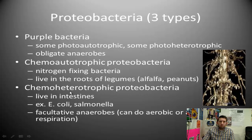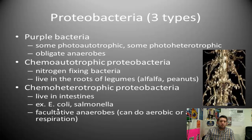Chemoheterotrophic proteobacteria can use chemicals to produce their own nutrients or obtain them in other ways. They live in the intestines — in the guts of many mammals and organisms. One example is E. coli, which is a natural part of our intestinal flora. It's necessary to help break down food and get nutrients, but if we have too much of it, it can poison us and make us very sick. Salmonella is another example — a harmful one. These are facultative anaerobes, meaning they can perform both aerobic and anaerobic respiration and are very tolerant of both conditions.